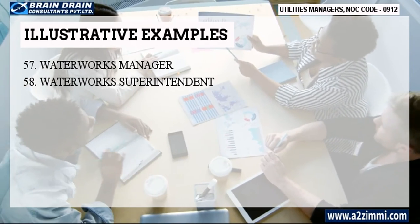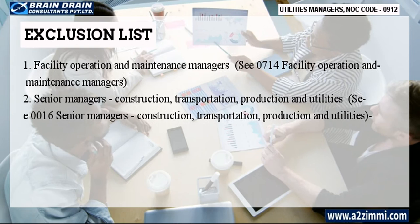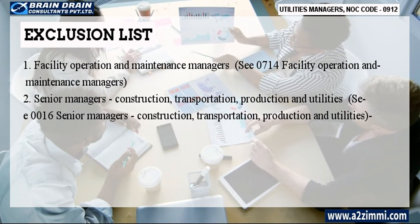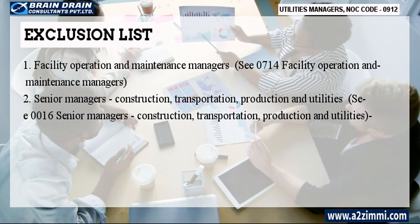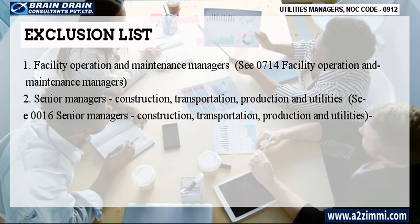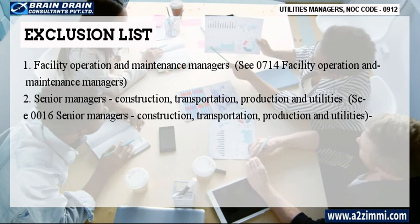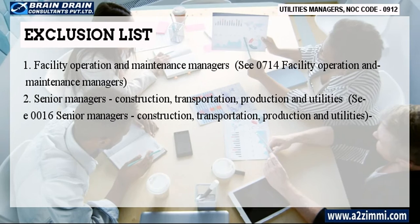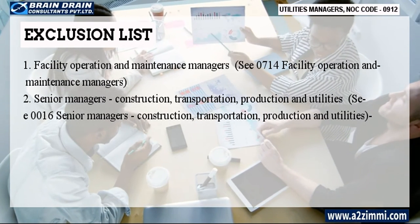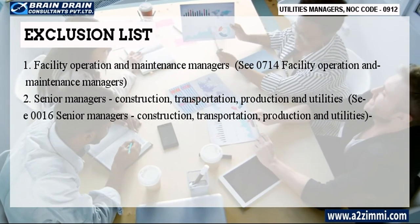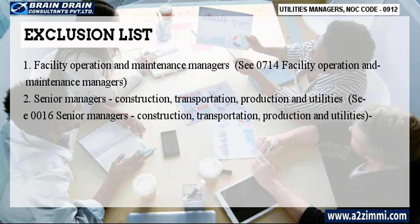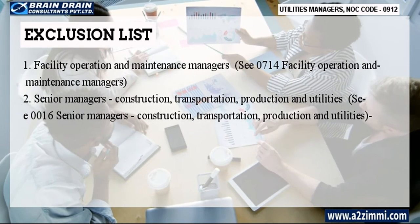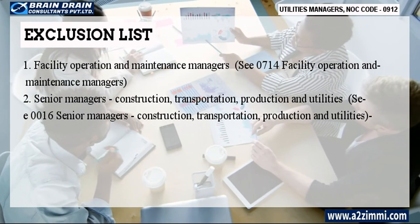Now let's see the exclusion list. Facility Operation and Maintenance Managers — C0714 Facility Operation and Maintenance Managers. Senior Managers, Construction, Transportation, Production, and Utilities — C0016 Senior Managers, Construction, Transportation, Production, and Utilities.